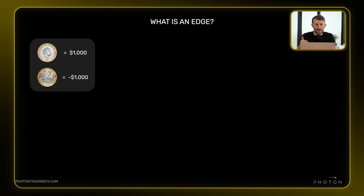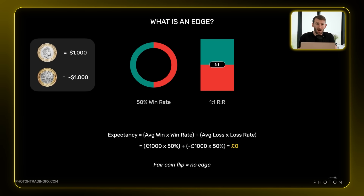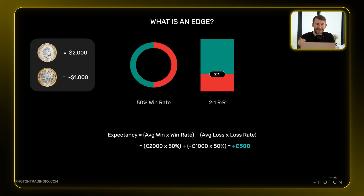Let's take a coin flip for example — you win a thousand dollars with heads, you lose a thousand dollars with tails. That gives you a 50% win rate with a one-to-one risk to reward ratio. Applying the expectancy formula, you end up making zero money in the long run — it's a fair coin flip with no long-term edge. But if you increase the win amount to two thousand dollars, you now have a 2:1 risk reward, and the formula shows your expectancy is 500 per flip — a proven profitable edge.